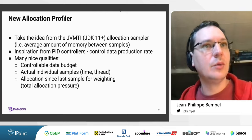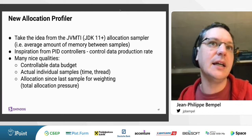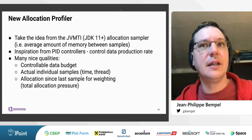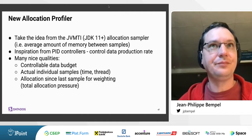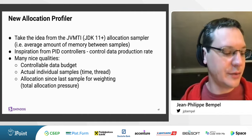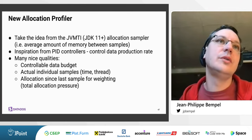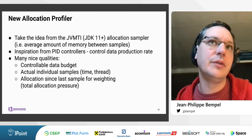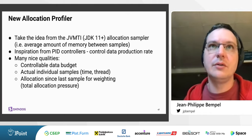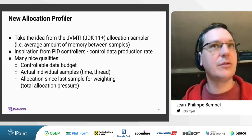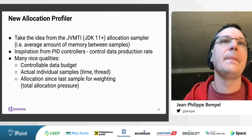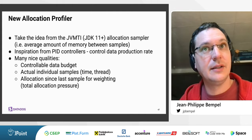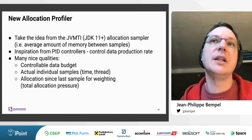Taking inspiration from the JVMTI allocation sampler available in OpenJDK since JDK 11, which uses the same code path as JFR events but lets you specify the average amount of memory between samples to modulate the rate, and again using PID controller theory to control data production rate — this gives us a controllable data budget with individual samples containing context information like time, thread, and the amount of allocated bytes since the last sample for weighting as total allocation pressure in the heuristic. This new allocation profiler landed in JDK 16 as the new 'ObjectAllocationSample' event.